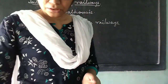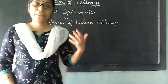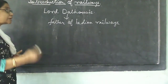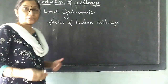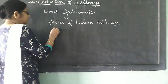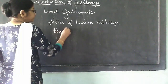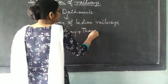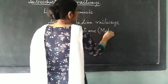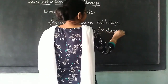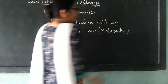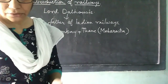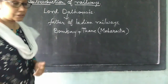Under Lord Dalhousie, the railway lines were first laid between Bombay and Thane in Maharashtra. The first railway had started to run in the year 1854.